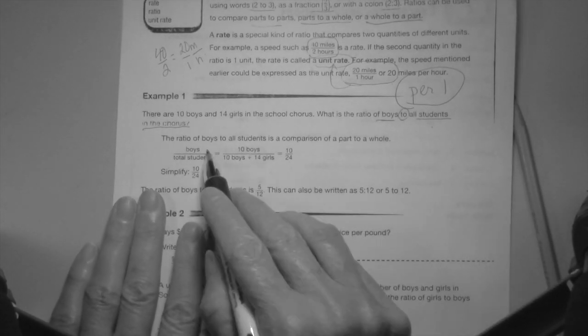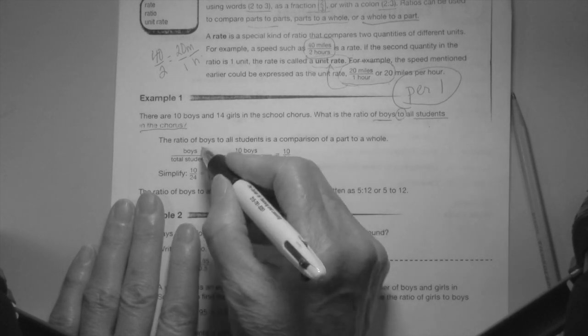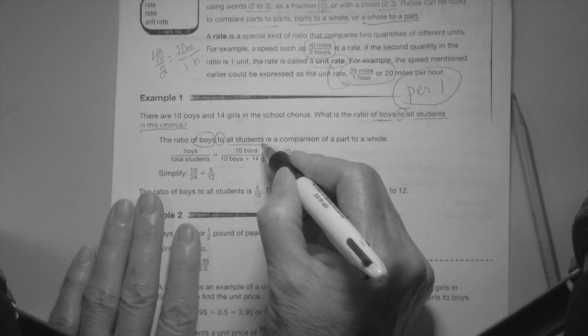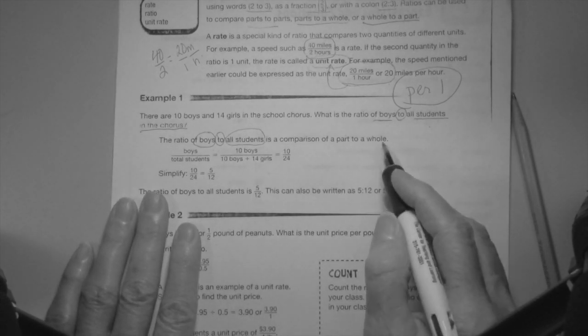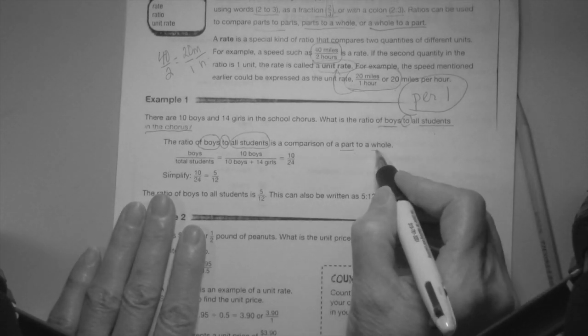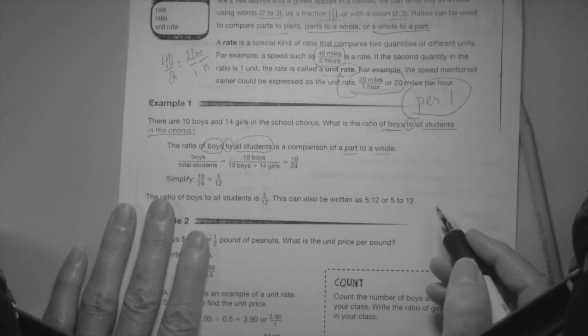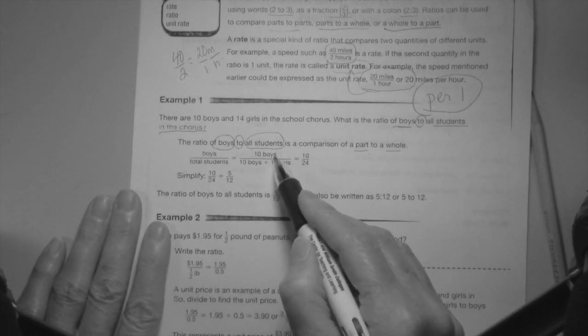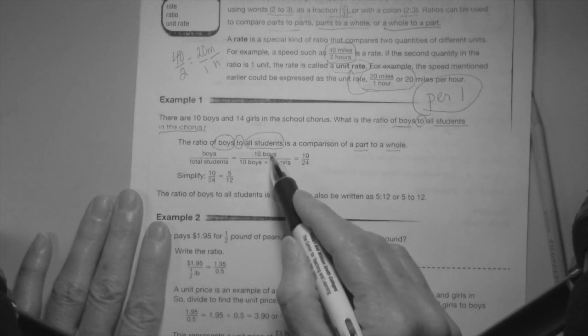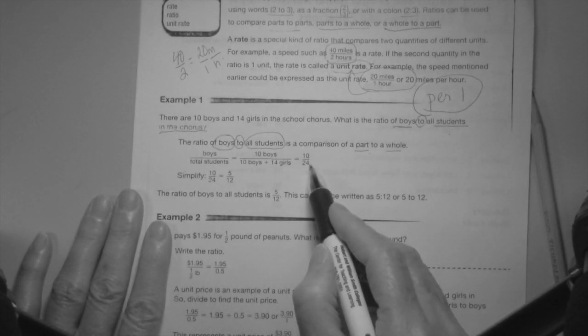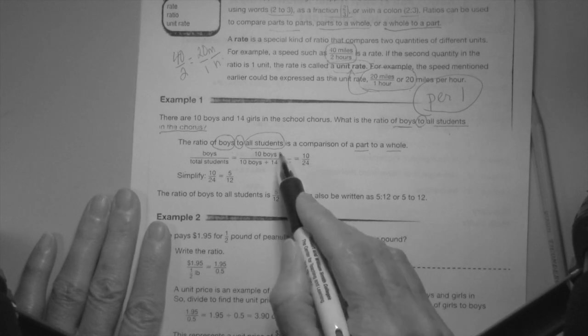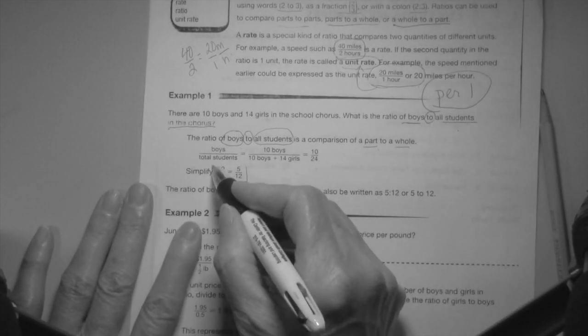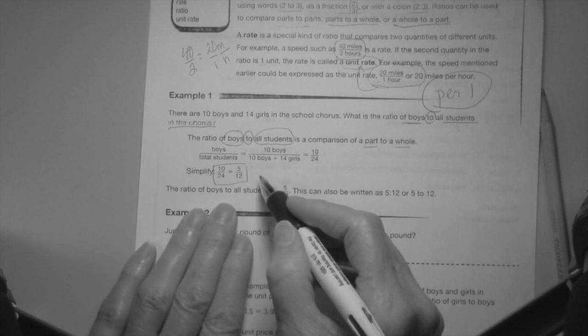It's not boys to girls, it's boys to all students in the course. The ratio of boys to all students, keywords is a comparison of a part to the whole. Boys over total students, 10 boys. How many total students are there? 24, because boys plus girls made the 24, so 10 out of 24.